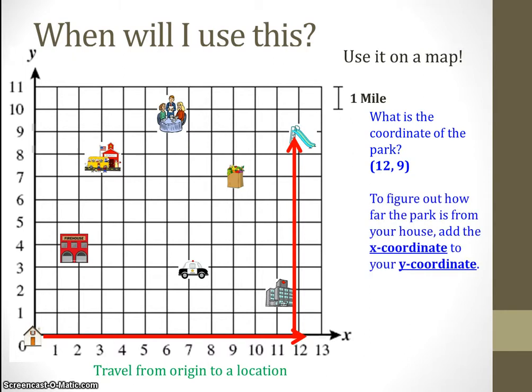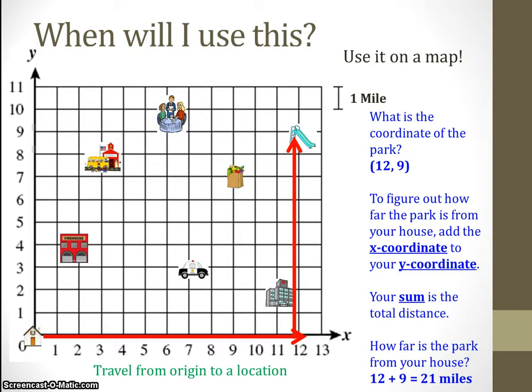To figure out how far the park is from your house, you must add the x-coordinate to your y-coordinate. Your sum is the total distance that you must travel. So how far is the park from your house? You must add 12 plus 9, and when you do 12 plus 9, you get 21 miles. The park is 21 miles from your house.